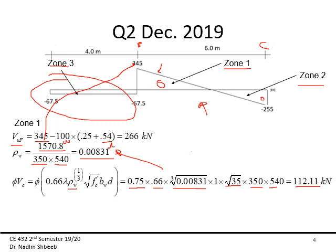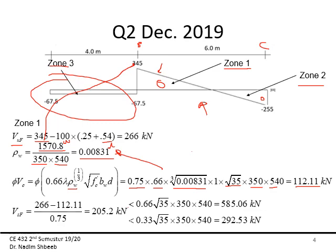Vu = 266 kN exceeds φVc = 112.11 kN, so shear reinforcement is required. Vs = (Vu − φVc) / φ = 205.2 kN. I compare this to the cap 0.66√f'c × bw × d and to the 0.33√f'c × bw × d threshold for spacing selection. Since Vs is less than both, I can use s = d/2 and the value is acceptable.